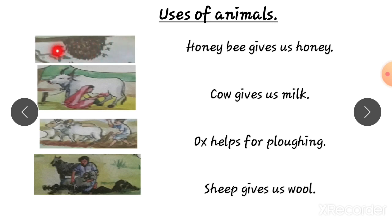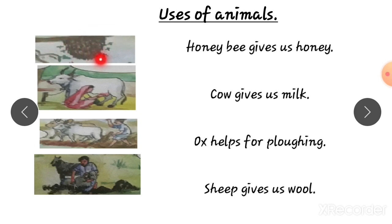See the first picture — this is a honeybee. What are the uses of honeybees? Honeybees give us honey. And from the hive, we can also get wax, which is used to make candles. Honeybee is a useful insect. In fact, honey is the only food eaten by humans that is produced by an insect.